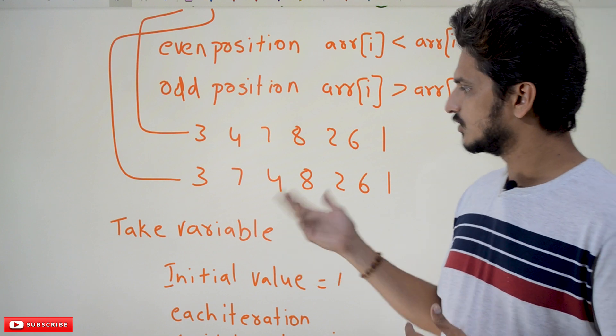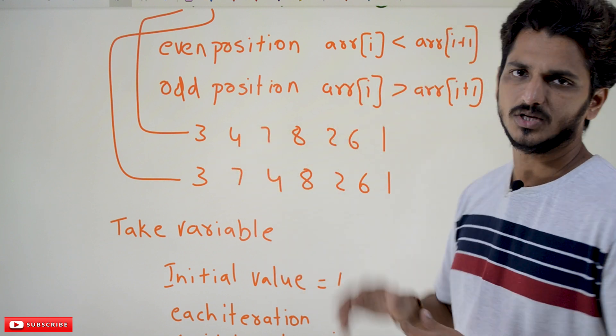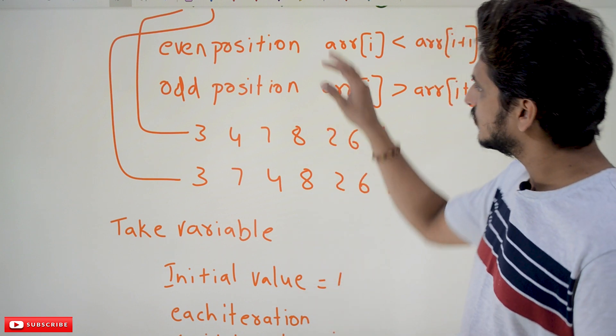So 3, 7, 4, 8, 2, 6, 1. This is what you are going to get the output if you apply this logic: even position, odd position.